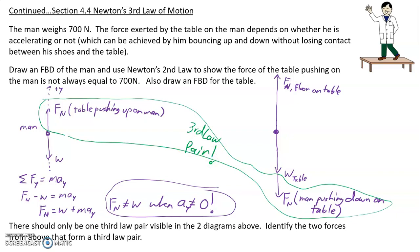All right, that's the only third law pair that's visible here. But every force that you see has a third law pair. Okay, if we were to draw a free body diagram for the floor, it'd be kind of a weird thing to do. But if we do that, then we will see the third law pair to this force, which is the table pushing down on the floor.